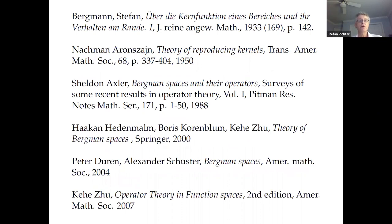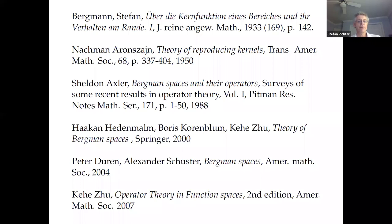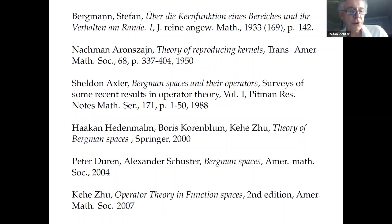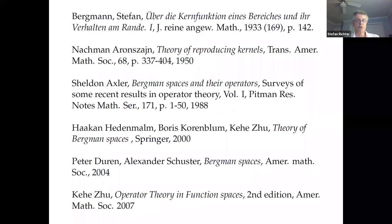Here are a few references. It started with Bergman's paper in 1933. A classic on reproducing kernels still worth reading is Aronszajn's paper from 1950. Sheldon Axler's overview paper from 1988 is also an excellent resource covering material from the 1980s and before. In the early 2000s, we have textbooks by Hedenmalm, Korenblum, and Zhu; one by Peter Duren and Alexander Schuster; and a later book by Zhu covering additional material.